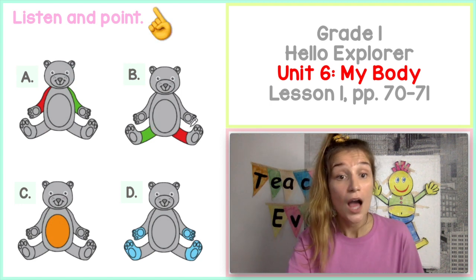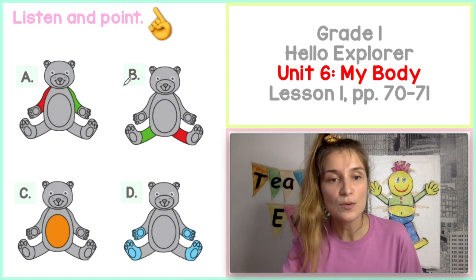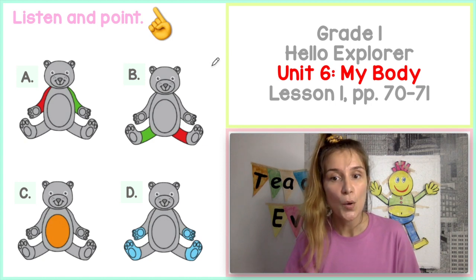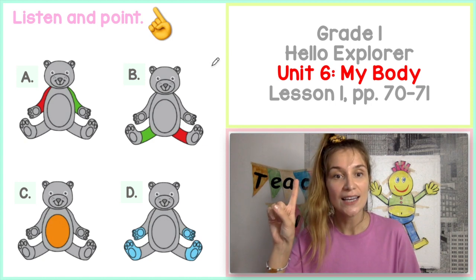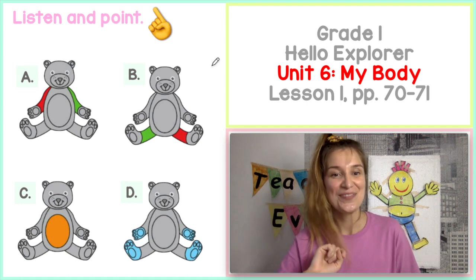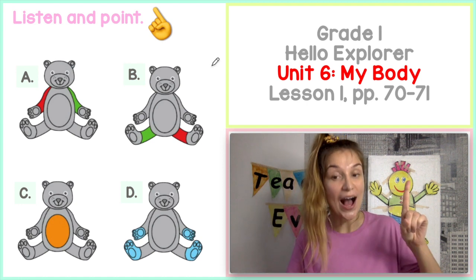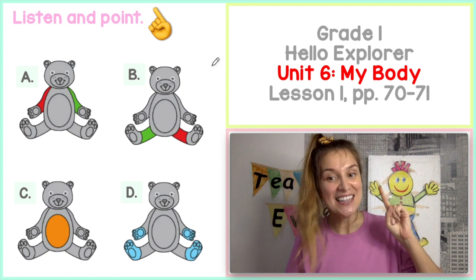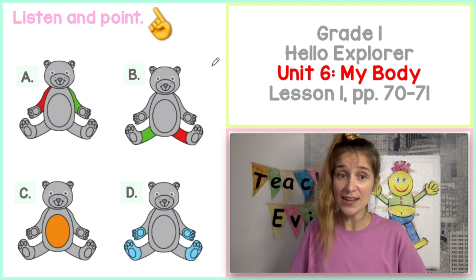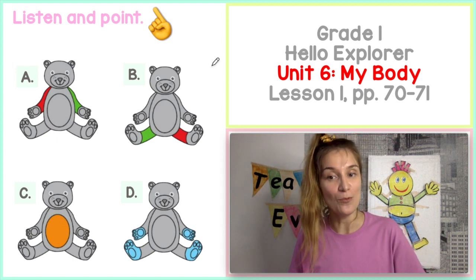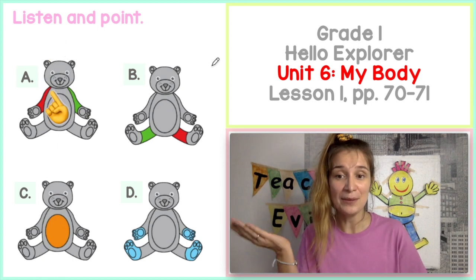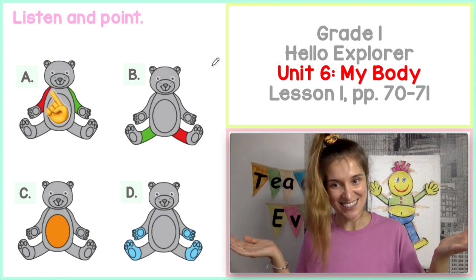Okay, so what about this teddy bear? He's got one red arm and one green arm. I've got one red arm and one green arm. Mam jedno ramię czerwone i jedno ramię zielone. Well done.